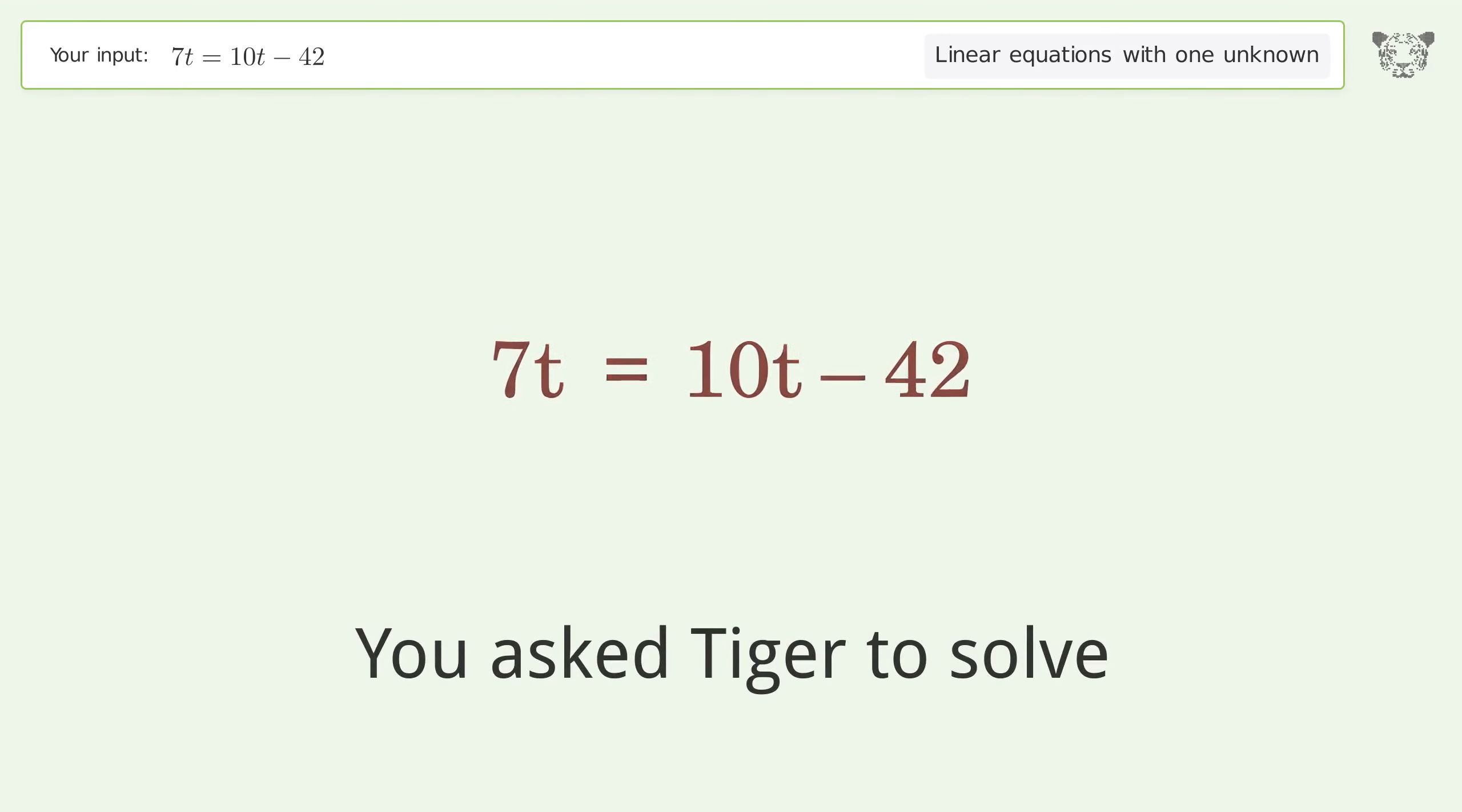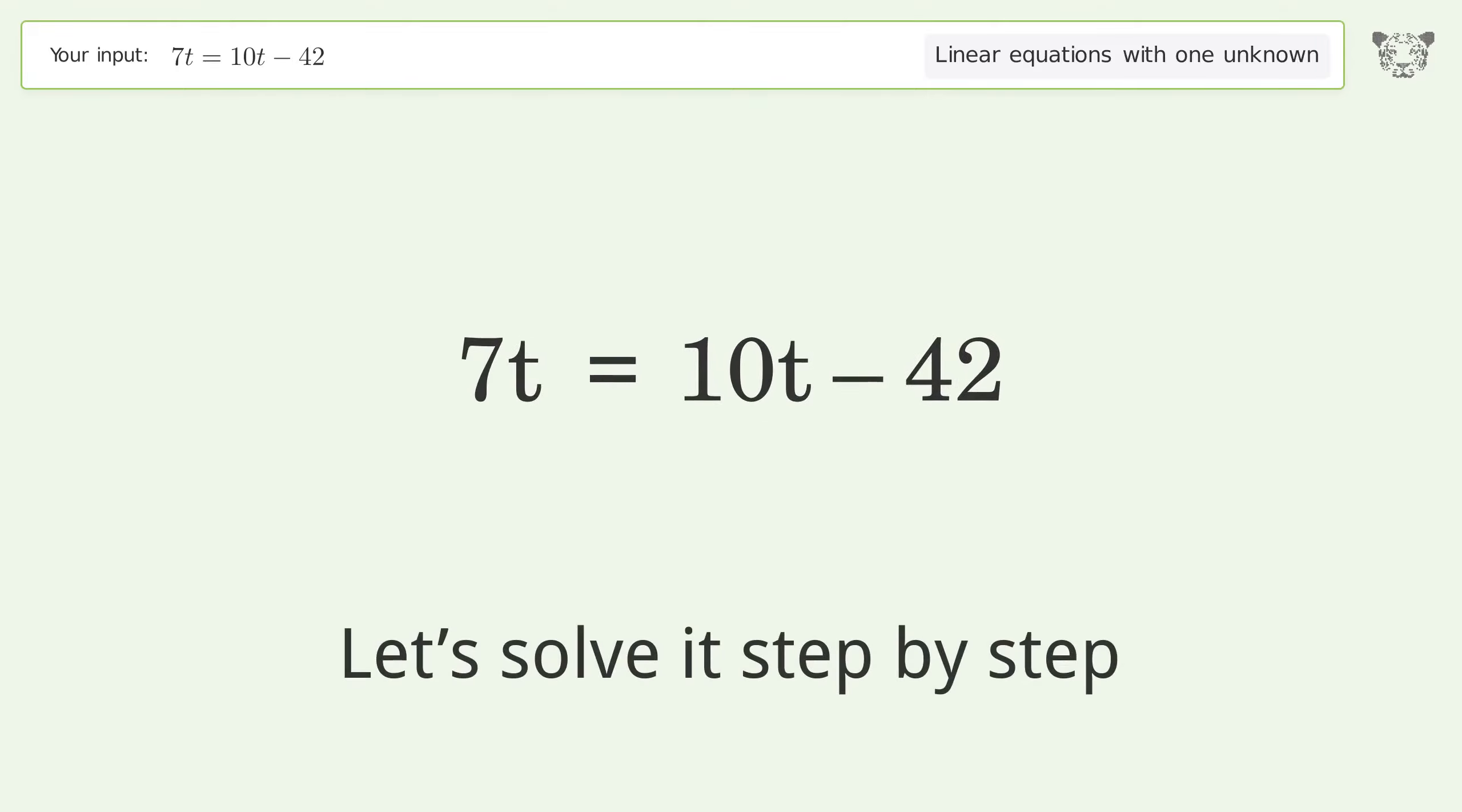You Asked Tiger to Solve. This deals with linear equations with one unknown. The final result is t equals 14. Let's solve it step by step.